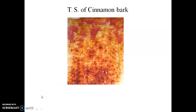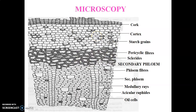Now we will start with the microscopy of cinnamon bark. After taking the transverse section of the cinnamon bark and staining it with fluoroglucinol and HCl, we will get the transverse section. The microscopy of cinnamon bark shows layers like periderm, which contains cork and cork cortex, then the stone cell layer which contains pericyclic fibers as well as sclereid, and the secondary phloem region which contains phloem fibers. In some cases the periderm region containing cork and cortex is absent.